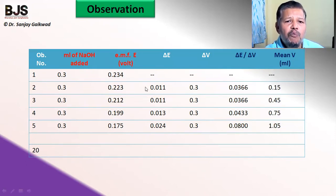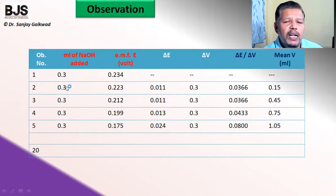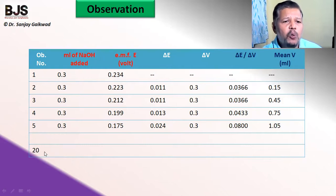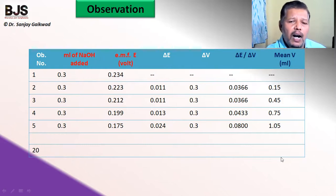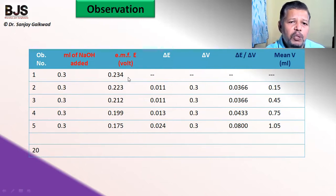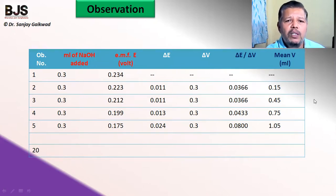Also calculate the mean volume V, which is the average volume between successive additions. Complete the observation table with all 20 or more readings from the potentiometer EMF measurements, including the mean V column.